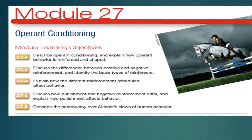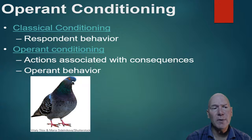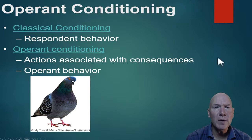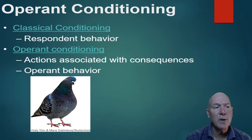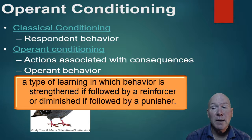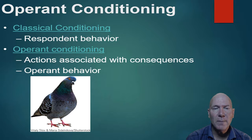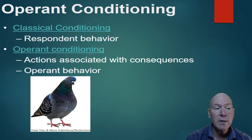Operant conditioning is different. It's based on Thorndike's law of effect, which states that if you do something and like what happens afterward, you're more likely to do it again. Classical conditioning involves respondent behaviors — naturally occurring reflexes. Operant conditioning can condition a much wider array of behaviors the animal or person is capable of. If the consequence of a behavior is favorable, the behavior is likely to be repeated; if unfavorable, it's likely to be avoided.